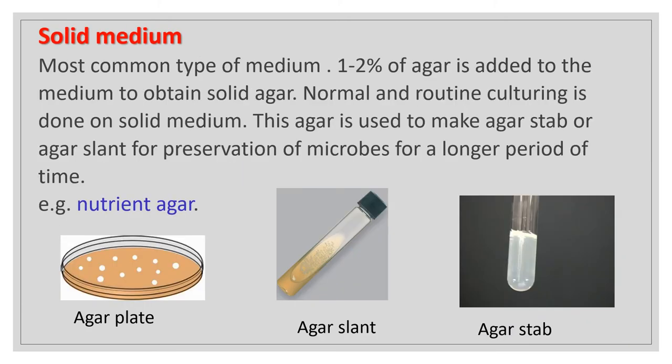Solid medium is the most common type. One to two percent agar is added to obtain a solid consistency. Normal and routine culturing is done on solid medium. This agar is used to make agar stab or agar slant for preservation of microbes for a longer period of time. For example, nutrient agar.